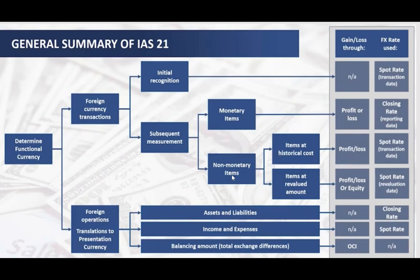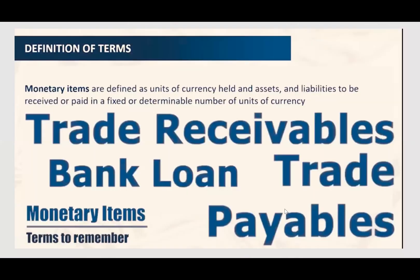For non-monetary items, they are measured at historical cost using the historical spot rate — the rate at the date of the original transaction. Non-monetary items are not retranslated at the closing rate; they remain at the historical spot rate. This is the key difference between the treatment of monetary and non-monetary items under IAS 21.